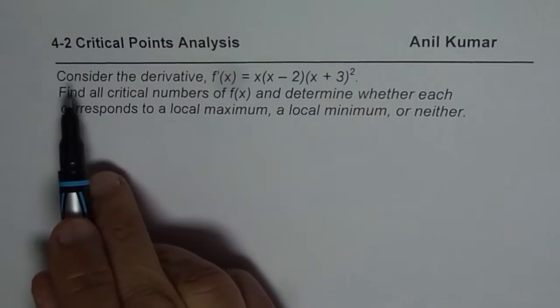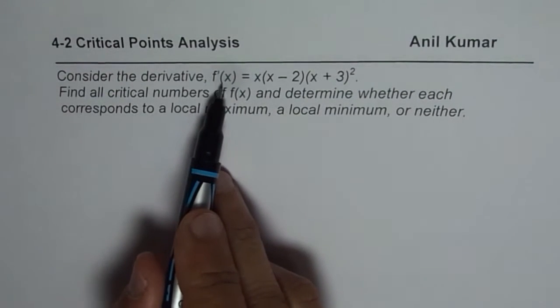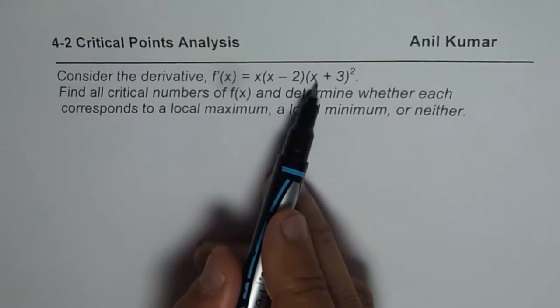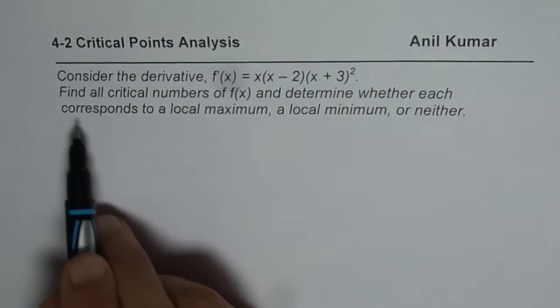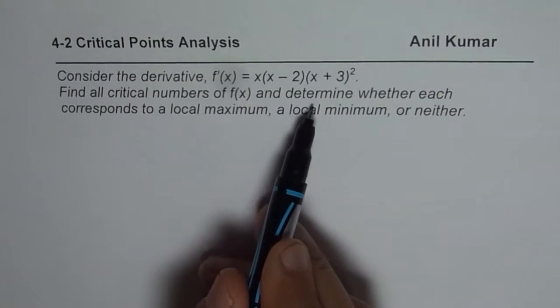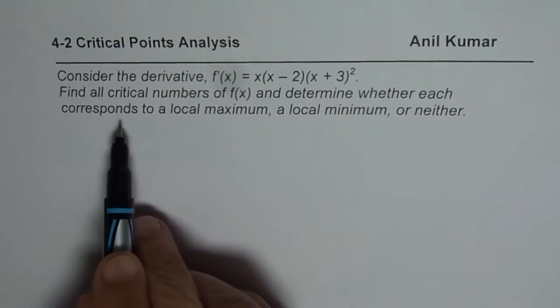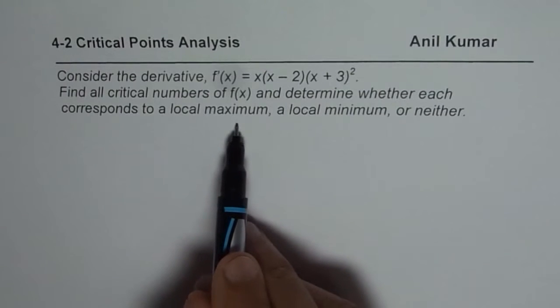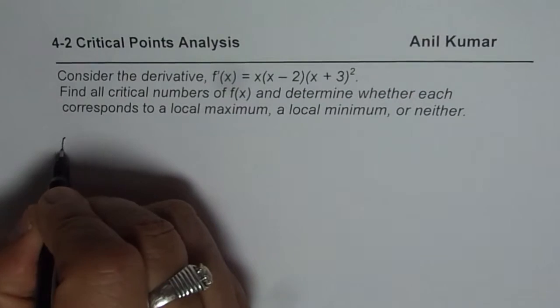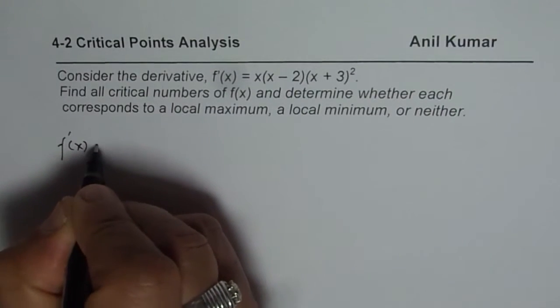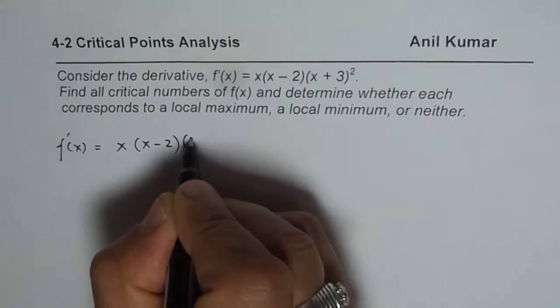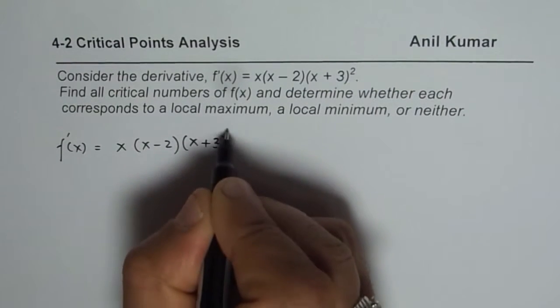Question is, consider the derivative f'(x) = x(x - 2)(x + 3)². Find all critical numbers of f(x) and determine whether each corresponds to local maximum or local minimum or neither. So, what we are given here is the derivative of the function.